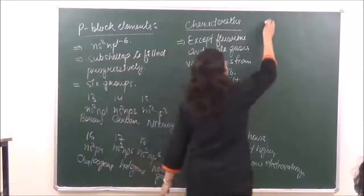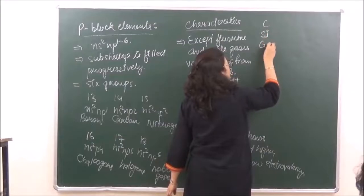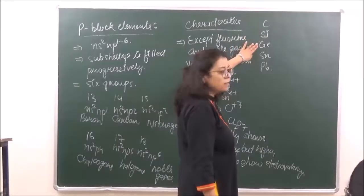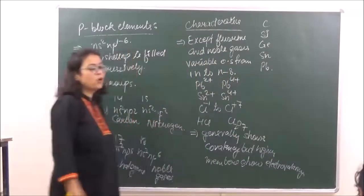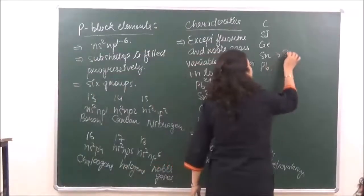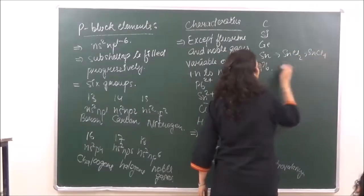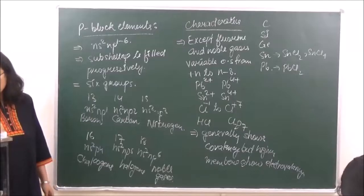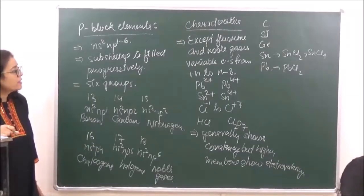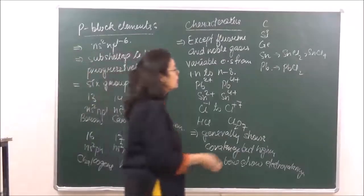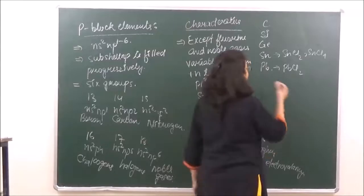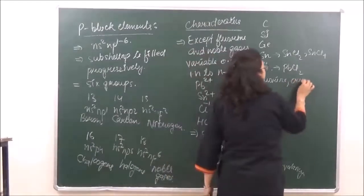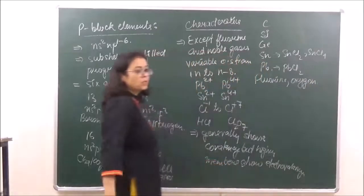Let's take the carbon family as an example: carbon, silicon, germanium, tin, and lead. Carbon, silicon, and germanium form only covalent compounds, whereas tin and lead have the tendency to form ionic compounds also, as in SnCl₂, SnCl₄, and PbCl₂. Higher members show electrovalency with highly electronegative elements like fluorine, and compounds of fluorine and oxygen with P block elements can form ionic compounds.